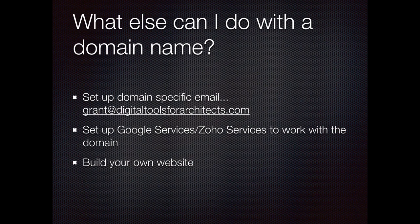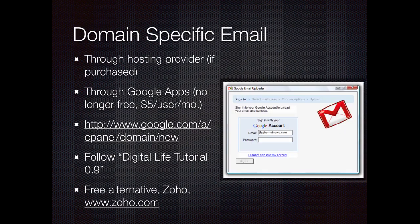If you buy a domain name, you can set up email specific to you — so instead of grant12345@gmail.com, you can have grant@digitaltoolsforarchitects.com. It's a very professional way of branding yourself. Google used to do this for free — mapping your domain name to Gmail — but now it costs $5 a month. However, there's a free service called Zoho that does basically the same thing and gives you email, calendar, and an online office suite.